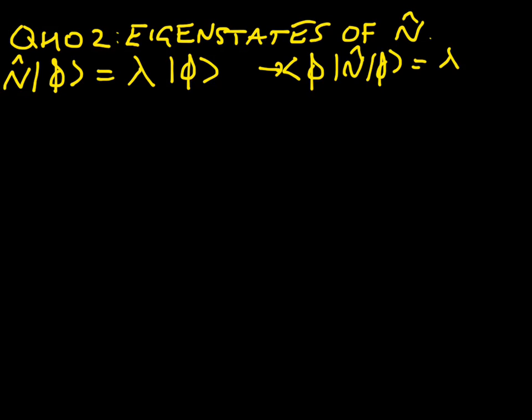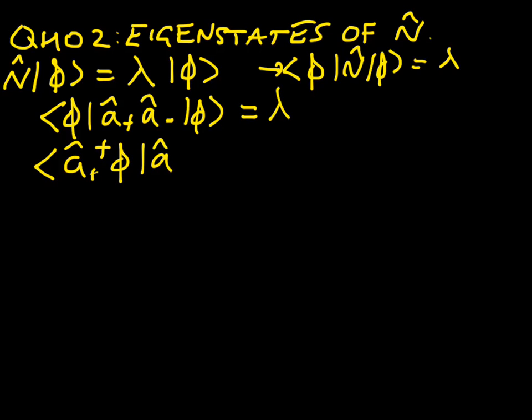Now, let's substitute in for the form of the number operator. So we find that bra phi, and then we have a-plus, and then we have a-minus, and then we have ket phi, and that's equal to lambda. Now we're going to use a useful trick, which is to say that we can take an operator inside a bra or a ket. When you take an operator inside a ket, of course it stays as it is. When you take it inside the bra, it becomes its Hermitian conjugate. So now we see that we have a-plus dagger acting on phi in the bra, and then we have a-minus phi in the ket. But a-plus dagger is just a-minus, so we see that a-minus phi in the bra, a-minus phi in the ket is equal to lambda.